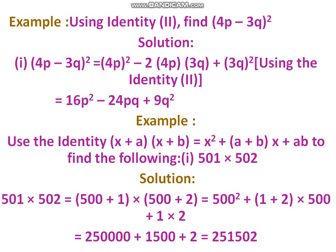There is also another standard identity: (x plus a) into (x plus b) equals x squared plus (a plus b) into x plus ab. Using this identity, find the product 501 into 502. We write 501 as 500 plus 1 and 502 as 500 plus 2. This is in the form of (x plus a) into (x plus b), giving 500 squared plus (1 plus 2) into 500 plus 1 into 2, which equals 251,502.